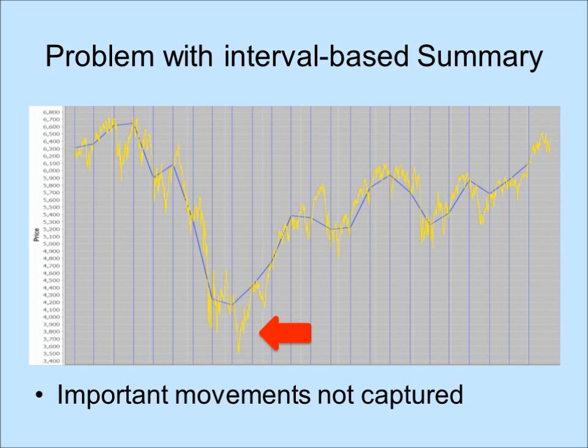In the example shown, the price dropped significantly below the few snapshots taken. They also fluctuated frantically there. These are not captured by our interval-based summary.